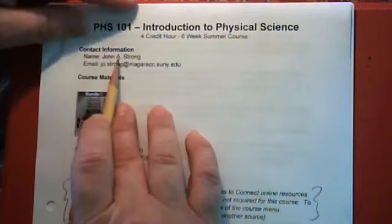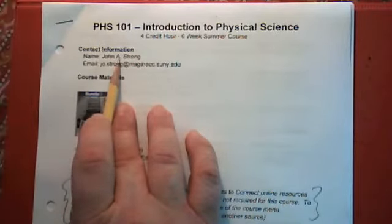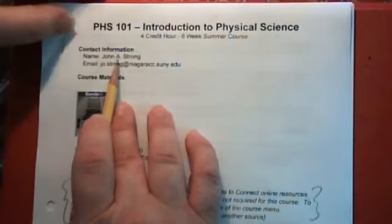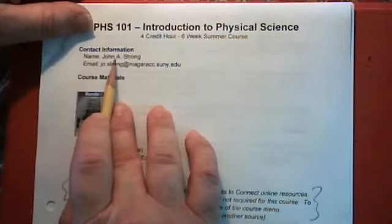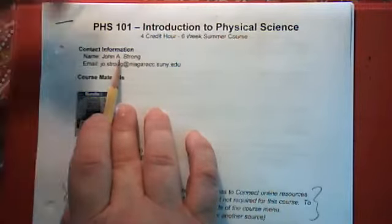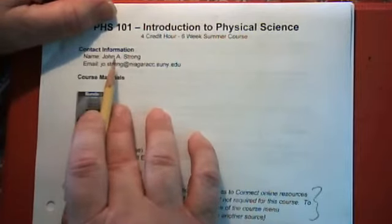I emphasize my middle initial because some of you may or may not be aware there are actually two John Strongs that end trip in a small world, and so we do have different middle initials though, so we both now emphasize our middle initials. I am John A. Strong. He is John D. Strong.